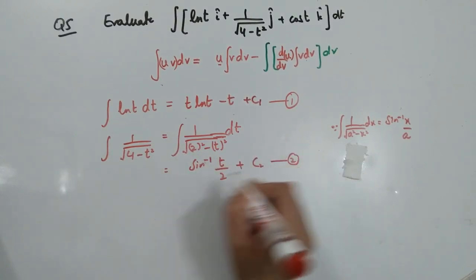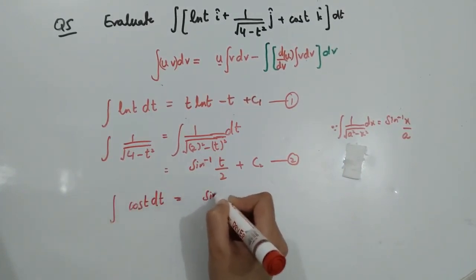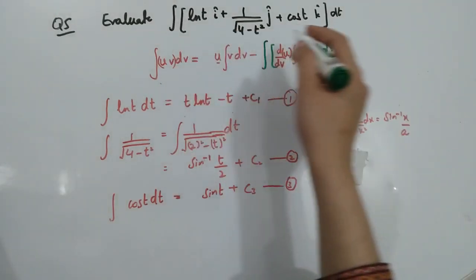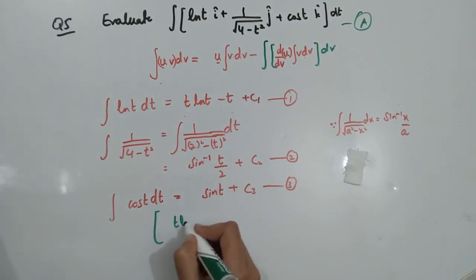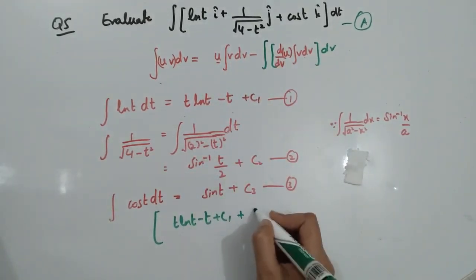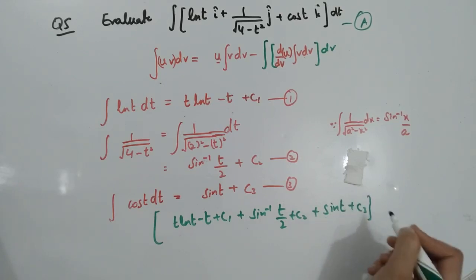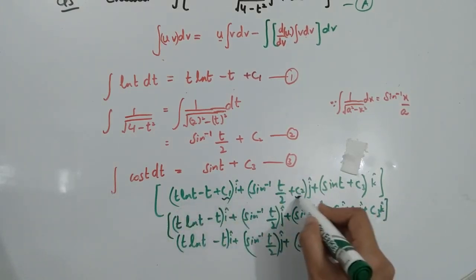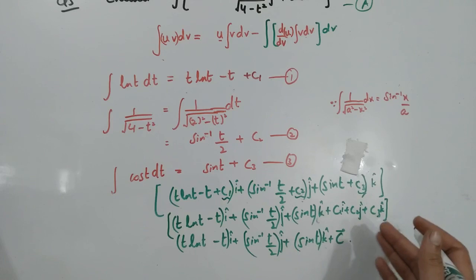The last component is cos(t), whose integration is sin(t) plus c3. Now combining all three values: ln(t) gives t·ln(t) minus t plus c1, the 1/sqrt(4 minus t squared) term gives sin inverse(t/2) plus c2, and cos(t) gives sin(t) plus c3. After simplification, the constants c1, c2, c3 form a constant vector C with components c1·i, c2·j, c3·k. This gives the final answer.